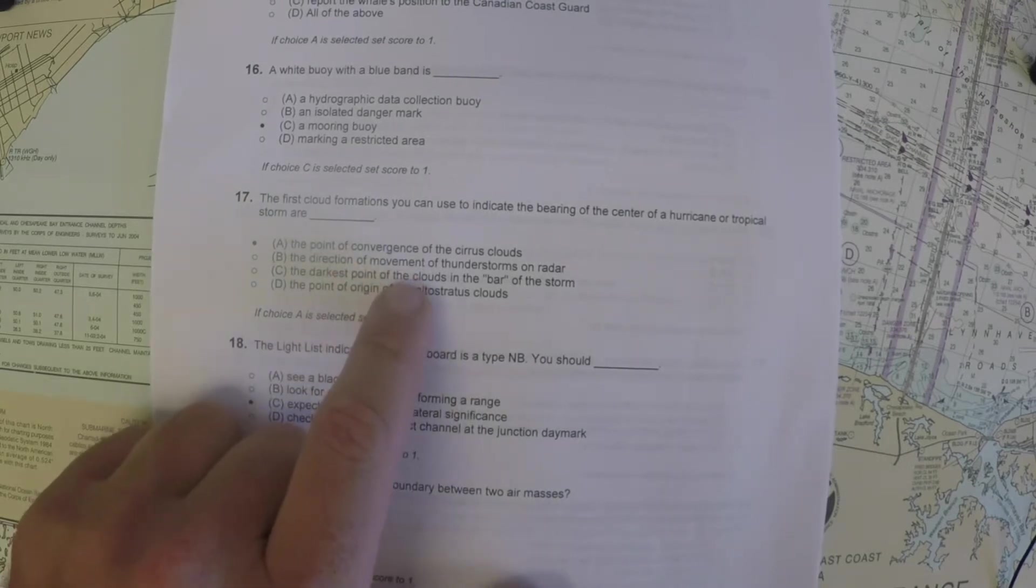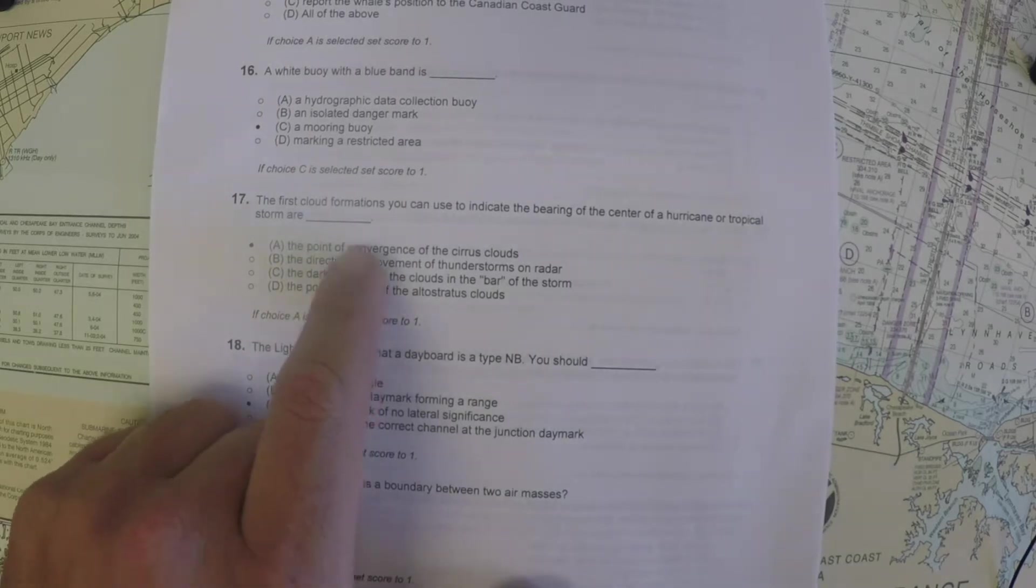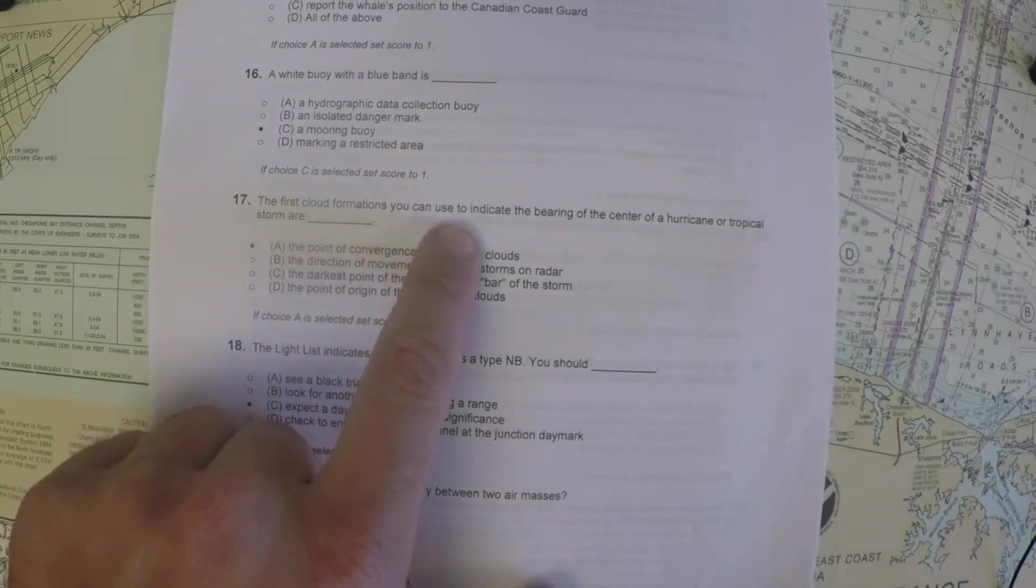Well, what they're trying to get at here is that B and C are indications that you're very close to the hurricane, and we're looking for the first cloud formations you can use.